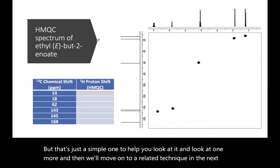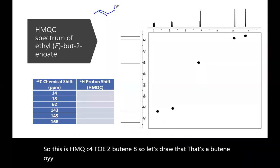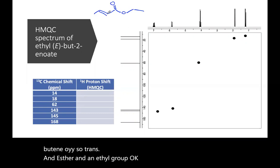So this is HMQC for ethyl E-2-butenoate. Let's draw that. That's butenoate-E, so trans, and an ester, and an ethyl group. Okay, so now I've got in terms of proton, I have an ethyl group and this vinyl group.